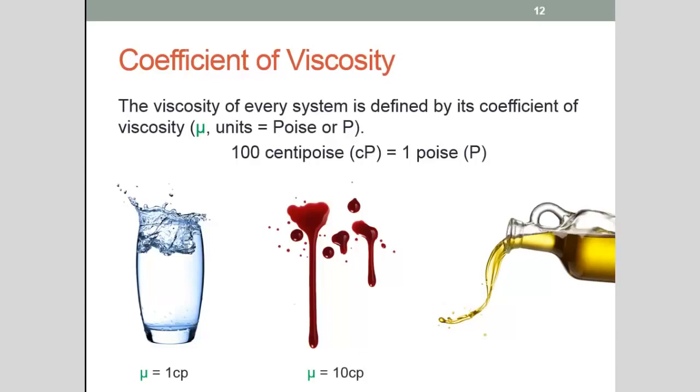I'll let you have a think for a second. Do you think it's going to be higher or lower? Is olive oil more viscous than both of these substances than blood and water or is it less viscous? I hope you've said that it's more viscous because it is. Its coefficient of viscosity is considerably higher at a hundred CP.